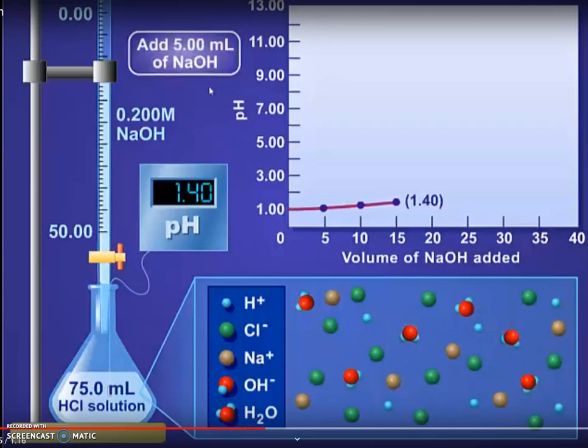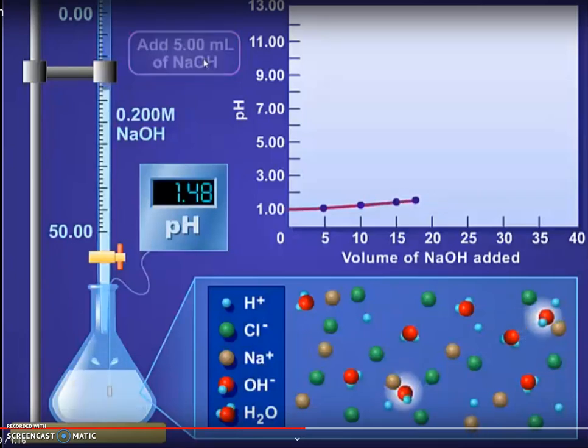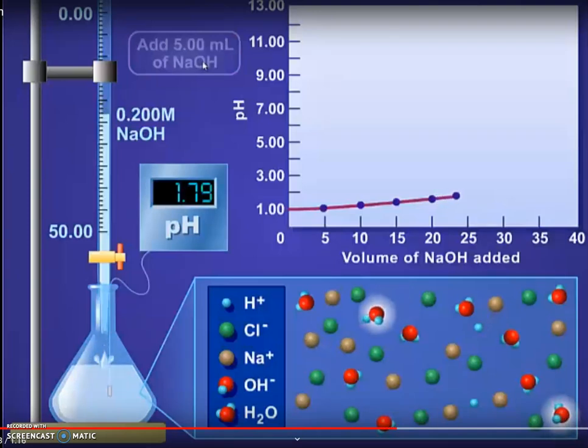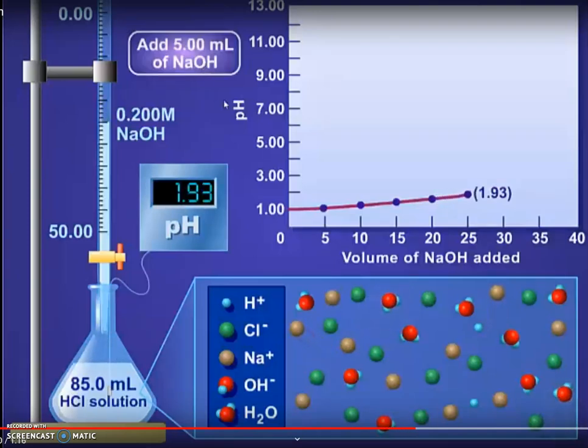Now as the endpoint approaches, we'll see a steep rise in the graph. This is because the NaOH at the endpoint has totally neutralized the HCl. Therefore, there is no NaOH or HCl present at the equivalent point when they're both completely neutralized.